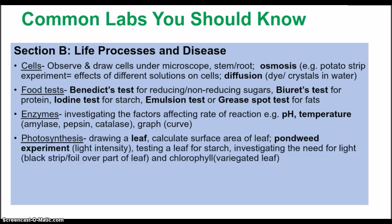For photosynthesis, know how to draw a dicotyledonous leaf and calculate its surface area using grid squares. Know the pondweed experiment, which examines the effect of light intensity on the rate of oxygen production. Also know how to test a leaf for starch — investigating the need for light by covering part of a leaf with foil or a black strip — and testing whether chlorophyll is needed for photosynthesis using a variegated leaf.